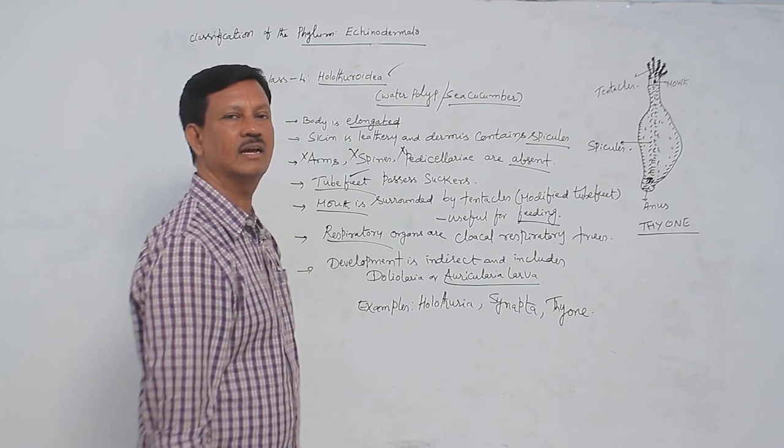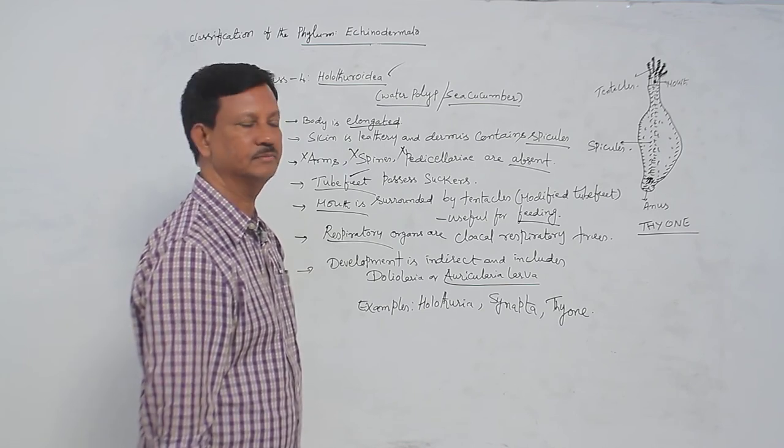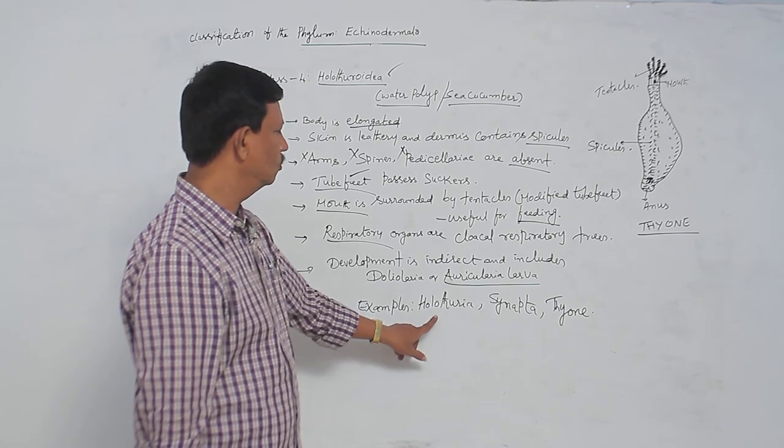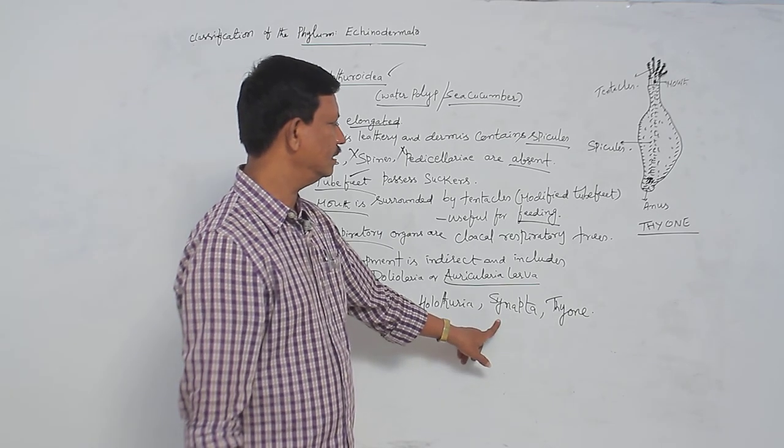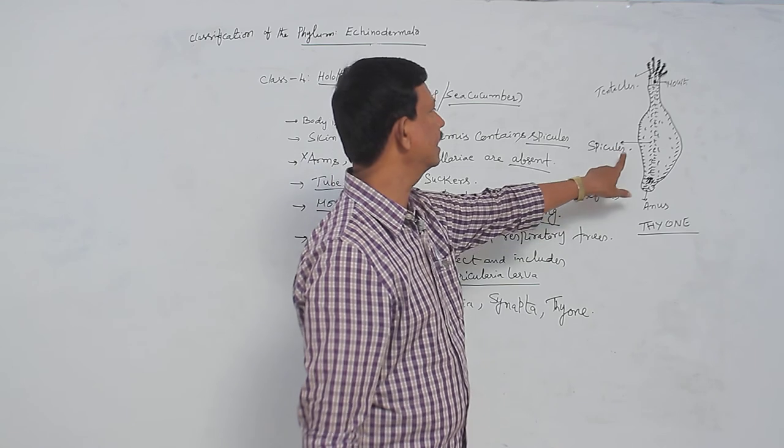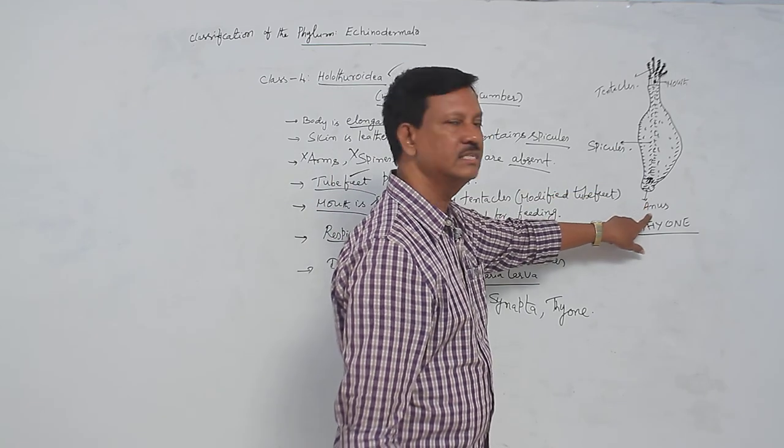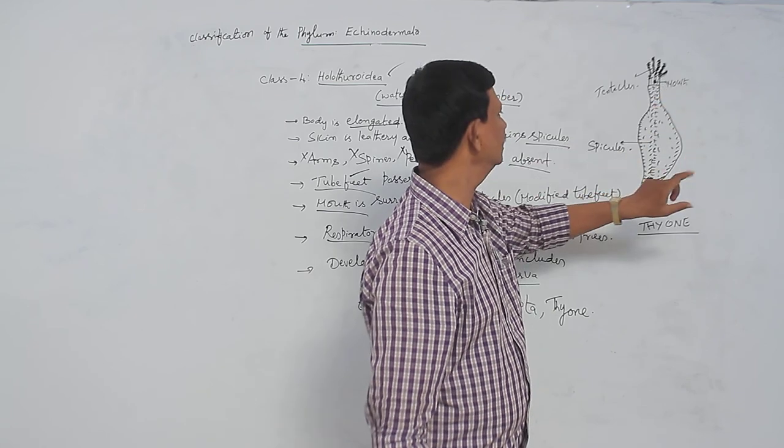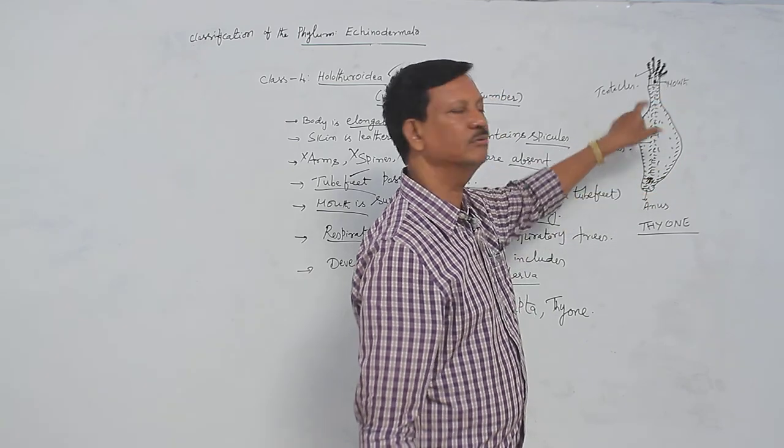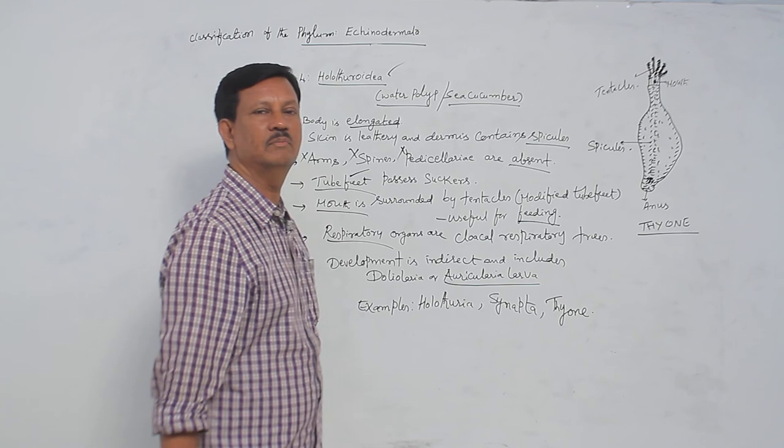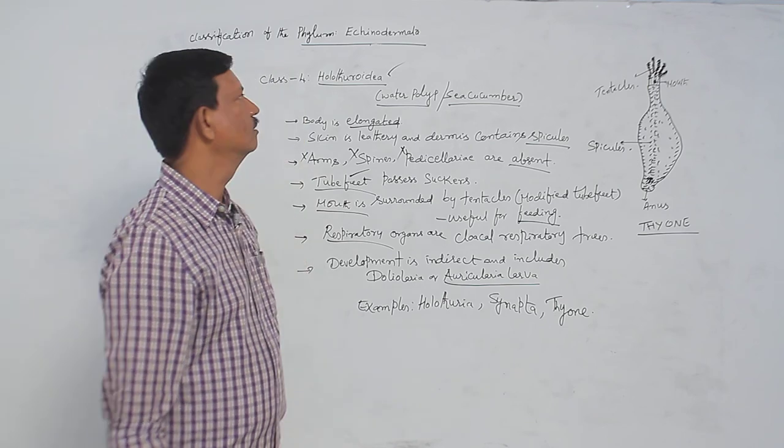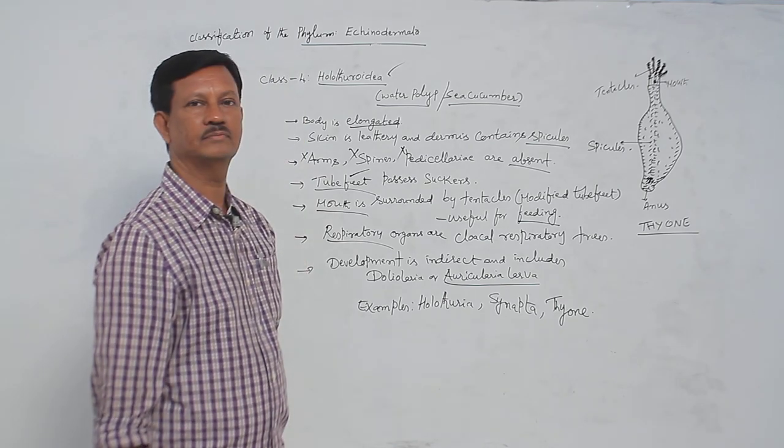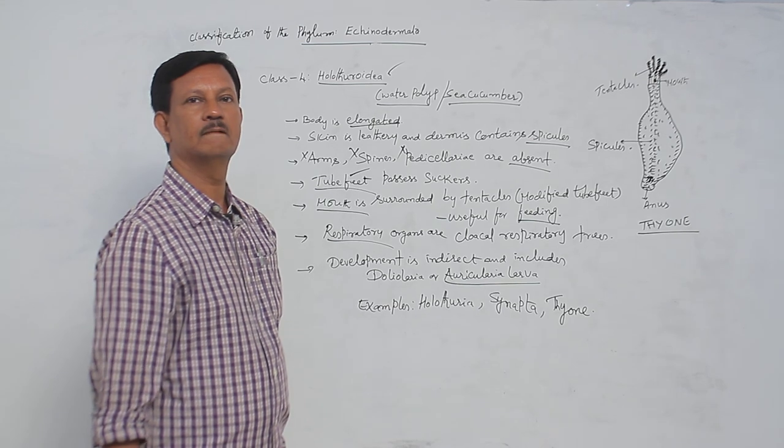Examples are Holothuria and Synapta and Thione. This is the diagram of Thione. At the posterior end of the body, anus is present. At the anterior region, mouth is present and spicules are present. Around the mouth, tentacles are present. These are the main characters of Holothuroidea.